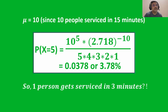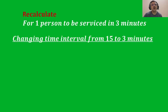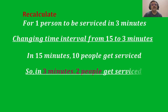Wrong. In this case, it does not work this way. We will need to recalculate the average service time for the change in time interval. If in 15 minutes 10 people get serviced, then in 3 minutes 2 people will get serviced. We get a new average for the changed interval. This is a better average number since it gives us a simpler understanding of average service efficiency.